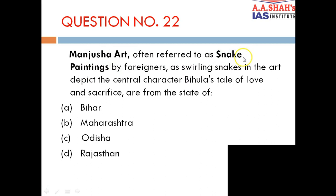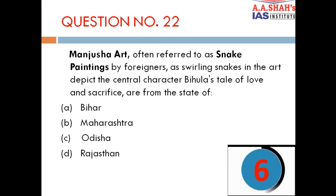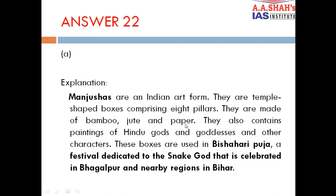Question 22: Manjusha art, often referred to as 'snake paintings' by foreigners — as swirling snakes depict the central character Bihula's tale of love and sacrifice — is from the state of A. Bihar. The correct answer is A — Bihar. Manjushas are temple-shaped boxes comprising 8 pillars, made of bamboo, jute and paper, containing paintings of Hindu gods and goddesses. These boxes are used in Bishahari Puja, the festival dedicated to the snake god, celebrated in Bhagalpur and nearby regions of Bihar.